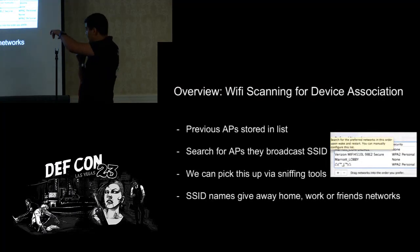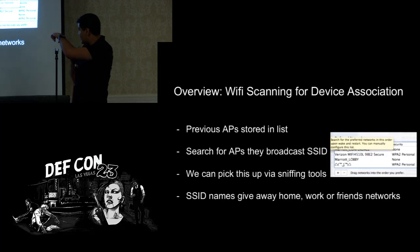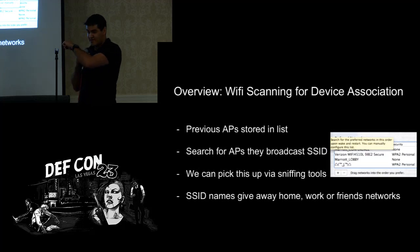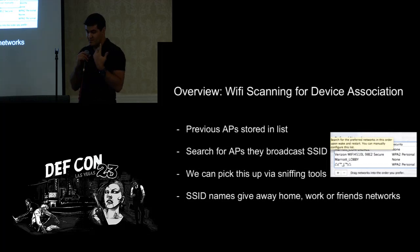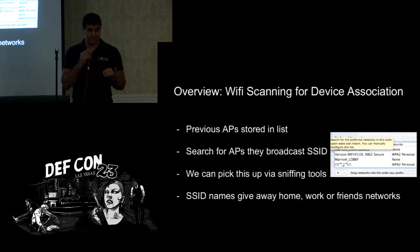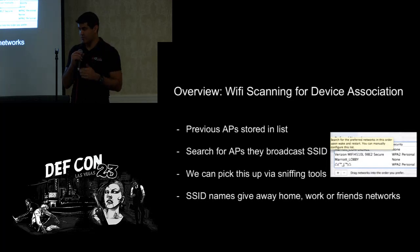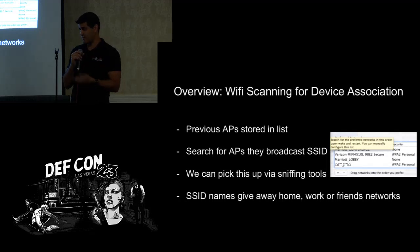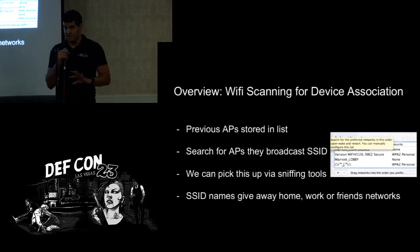Every Wi-Fi network you've ever connected to, if you have not cleaned this out, is actually broadcasting those SSIDs back. So I went to the Marriott, I had a friend with a Verizon Wi-Fi connected, and all of these are broadcasting and are identifiers. They can give away your home Wi-Fi, your work — if you work at IT Widgets, they'll know that — and also your friends' networks, which can give location information.